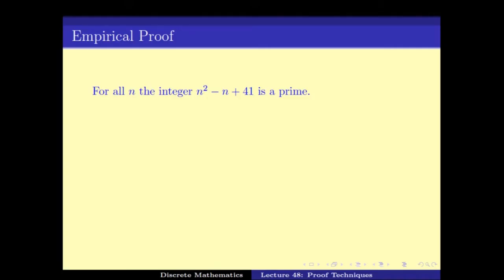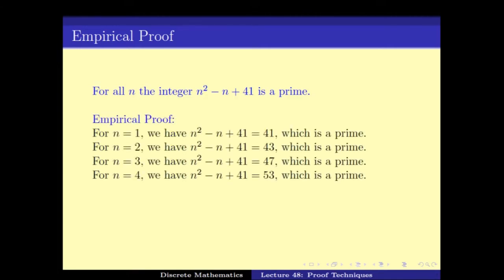For experimental proof, say for this example, the technique is to try out for all different values of n. And once we are convinced that for quite a number of values of n this statement is correct, we conclude that this statement is correct for all n.